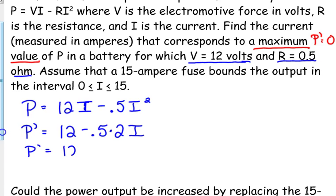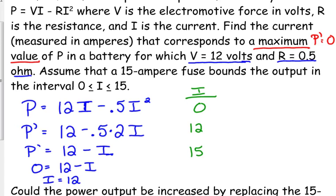We set that equal to zero, and that tells us that I equals 12. Okay, so that's the potential for the maximum power. But we're on an interval, so we always check our endpoints. So when I is 0, 12, and 15, that's what we're looking for. When I is 0, we have 0 power. That kind of makes sense—if there's no current running through, then we have no power.